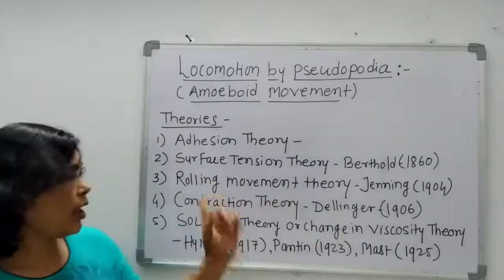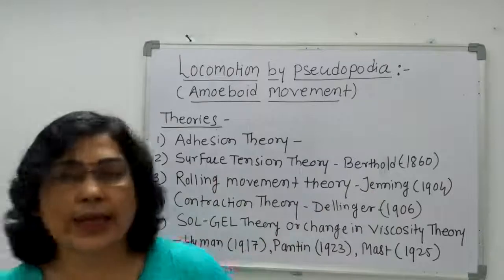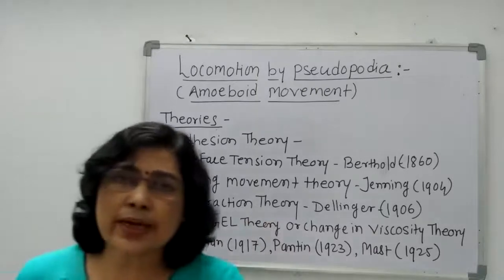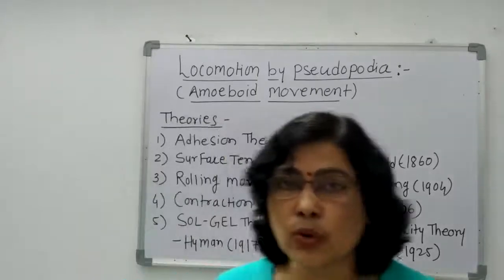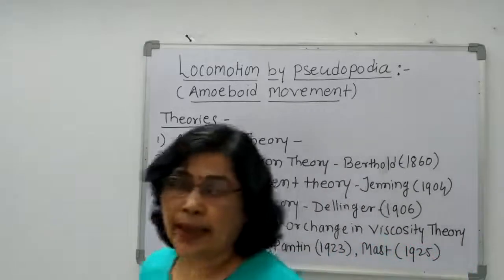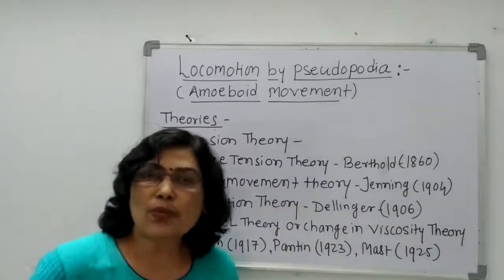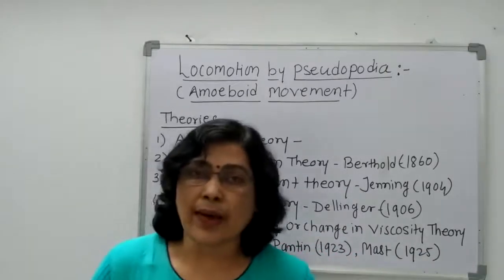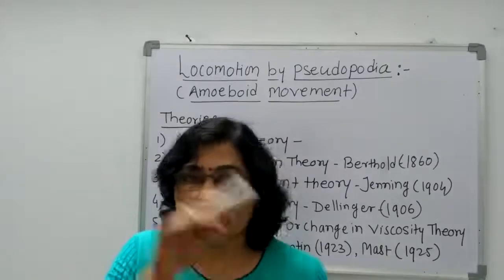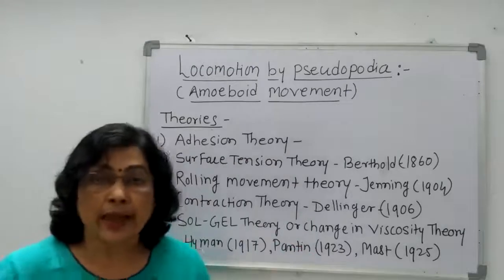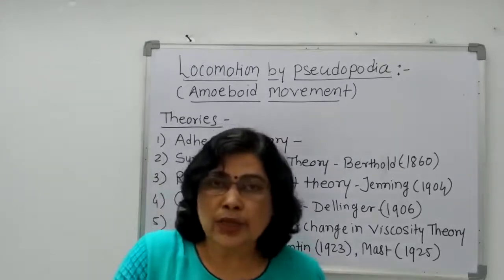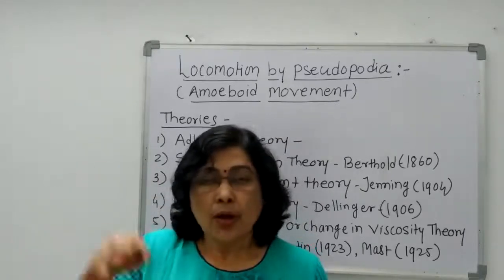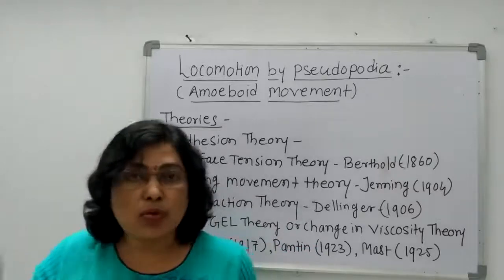Number 3 ki theory hai Rolling Movement Theory, which was proposed by Jenning in the year 1904. Is theory mein jis organism ko study kiya gaya tha woh tha Amoeba verrucosa. Ab yeh Amoeba verrucosa — uske saath do prakar ki movement hoti hai: number 1, uska cytoplasm streaming way mein ghoomta rehta hai; doosra, uska jo cell ya body hai woh roll karta hai. Toh yeh amoeba verrucosa streaming movement ke karan aur rolling of body ke karan move karta hai.